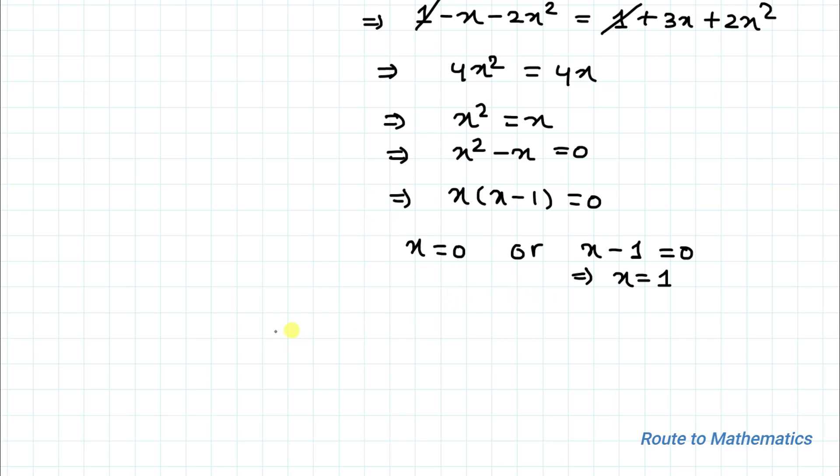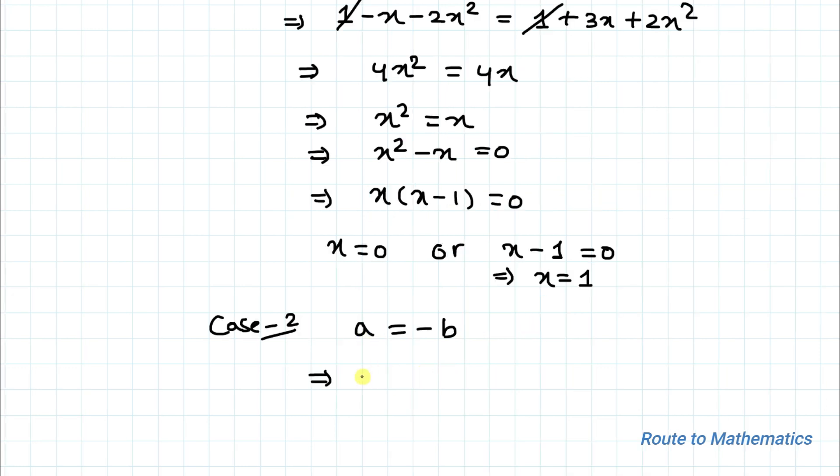So here we are getting two solutions of x. Now in Case 2, we will solve for a equals -b. Let's put the expression here. So we have 1 - x - 2x² equals -(1 + 3x + 2x²).